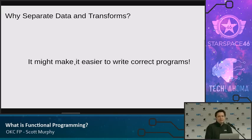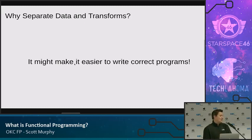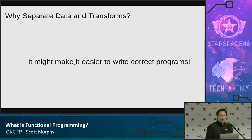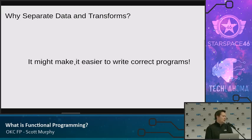Another reason you might want to separate data and transforms is it makes it easier to write correct programs. A lot of the rest of this is going to be about program correctness. When I was in school learning about programming, program correctness was almost an afterthought — maybe you had one proof class, a little bit of talk about it, and then the rest of the time: if your program does what it's supposed to do, it's correct. I think that falls apart when you hit more complicated systems. You really want to know that your program is going to be robust to varied inputs and behave in an expected manner. That more than anything is what functional programming allows you to have.